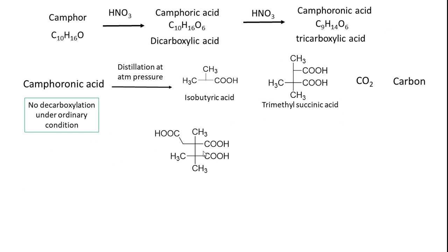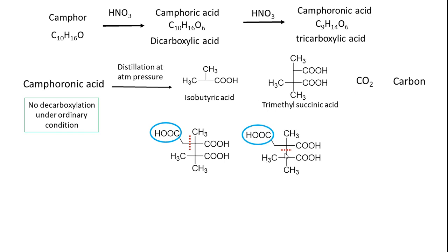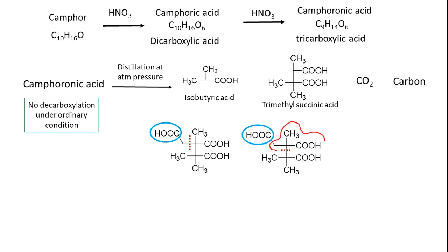In the proposed structure of camphoronic acid, cutting the structure at different positions yields carbon dioxide, a carbon fragment, trimethylsuccinic acid from one cut, and isobutyric acid from another. Both cutting options yield isobutyric acid as a fragment, consistent with the experimental observations. In this way, scientists proposed this structure for camphoronic acid.